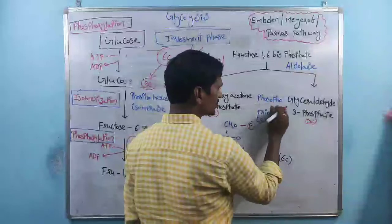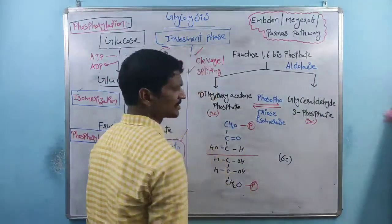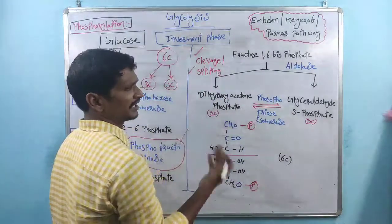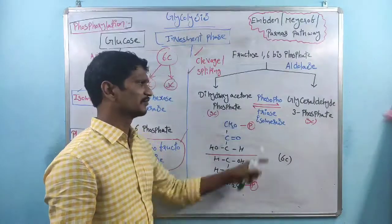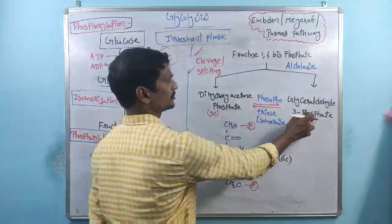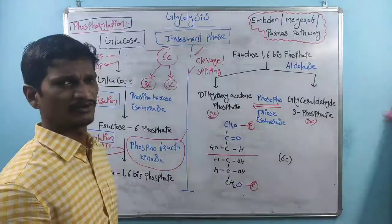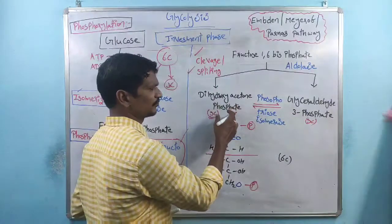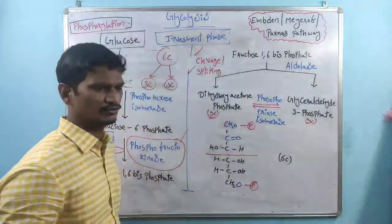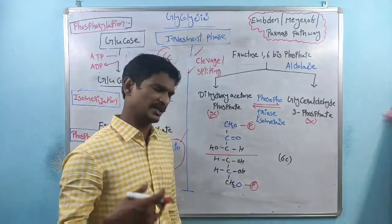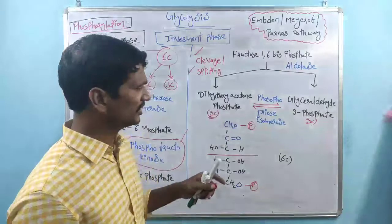Between these two products, interconversion takes place. Sometimes dihydroxyacetone phosphate is converted into glyceraldehyde-3-phosphate, or glyceraldehyde-3-phosphate is converted into dihydroxyacetone phosphate. This internal conversion is carried out by the phosphotriose isomerase enzyme. 'Phospho' means phosphate groups are present; 'triose' means three carbon atoms are present. These two compounds have the same molecular formula but different internal arrangements — so this is an isomerization.